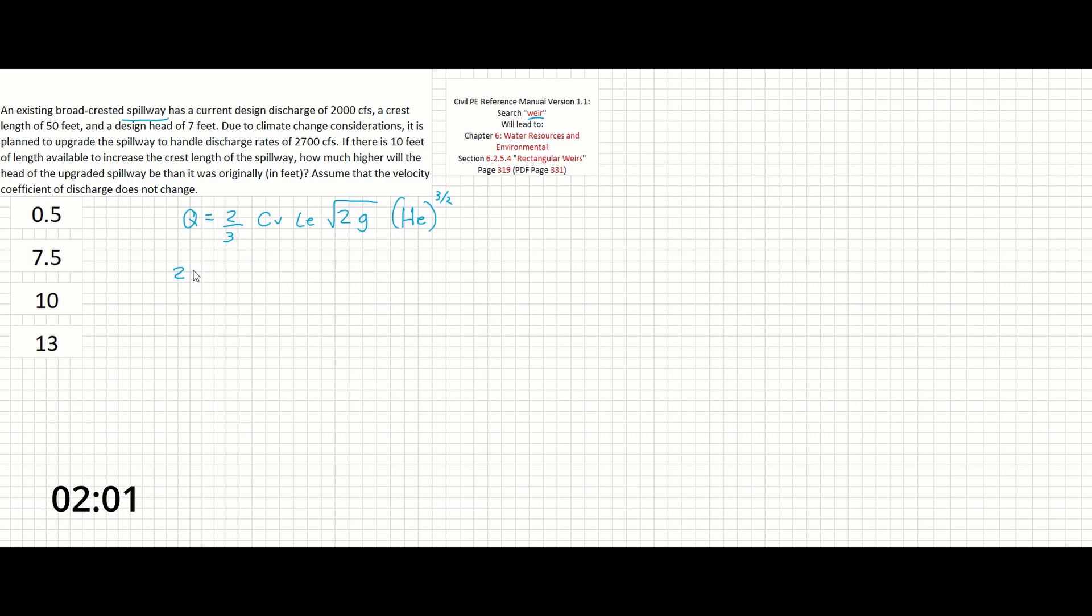So we have 2000 cubic feet per second equals 2 over 3 times CV times LE is going to be 50 feet times the square root of 2 times 32.2 feet per second squared. And then the design head is 7 feet raised to the 3 over 2.